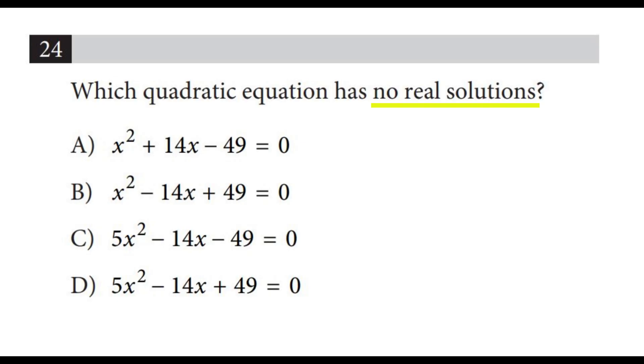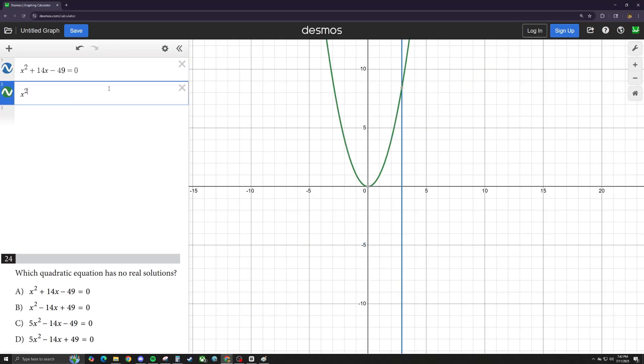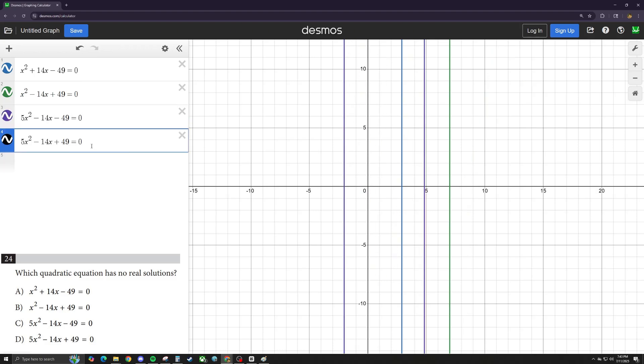For questions like these where you're asked to evaluate every single answer choice, you could just plug all of them into Desmos and see what you get. So for this case, it asks for what has no real solutions. After you plug in every single equation, you just see which one doesn't plot properly.